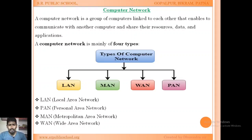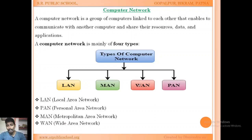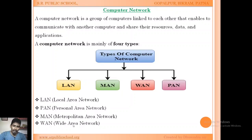A computer network is mainly of four types. First is LAN, second is MAN, third is WAN, and last one is PAN. LAN stands for Local Area Network, MAN stands for Metropolitan Area Network, WAN stands for Wide Area Network, and PAN stands for Personal Area Network.